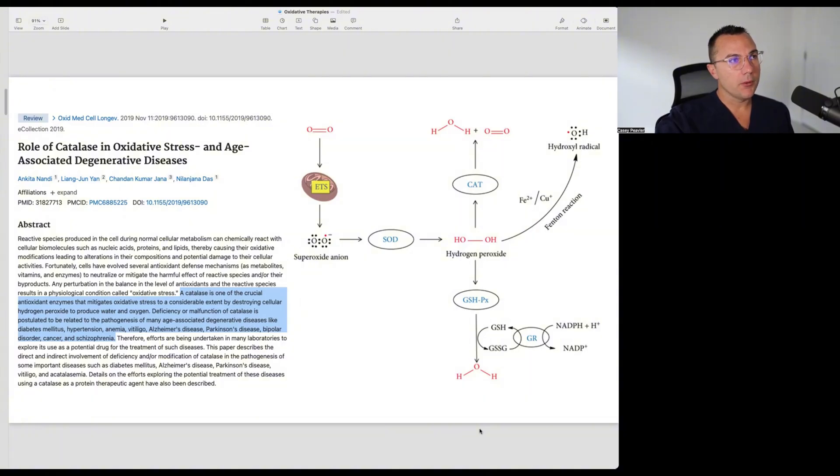The first paper I'm going to look at was published in 2019 and it's titled the role of catalase in oxidative stress and age associated degenerative diseases. It says here that catalase is one of the crucial antioxidant enzymes that mitigates oxidative stress to a considerable extent by destroying cellular hydrogen peroxide to produce water and oxygen. Deficiency or malfunction of catalase is postulated to be related to the pathogenesis of many age associated degenerative diseases like diabetes, hypertension, anemia, vitiligo, Alzheimer's, Parkinson's, bipolar, cancer, and schizophrenia. And the graphic that was part of this paper tells the story.